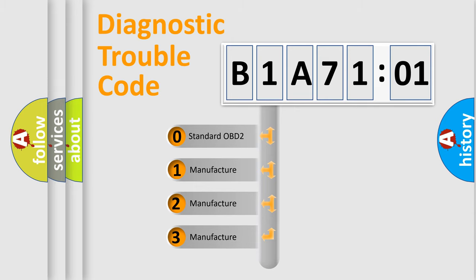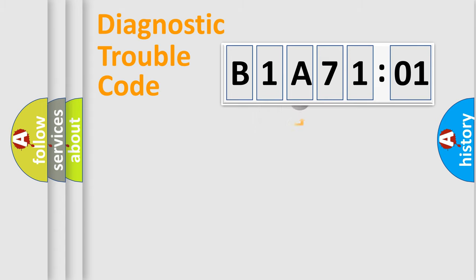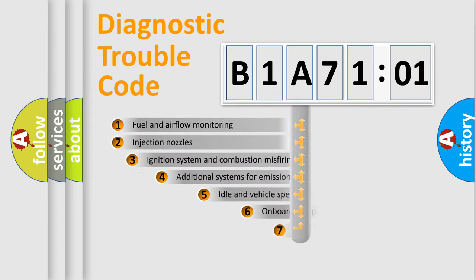If the second character is expressed as zero, it is a standardized error. In the case of numbers 1, 2, or 3, it is a more prestigious expression of the car-specific error.